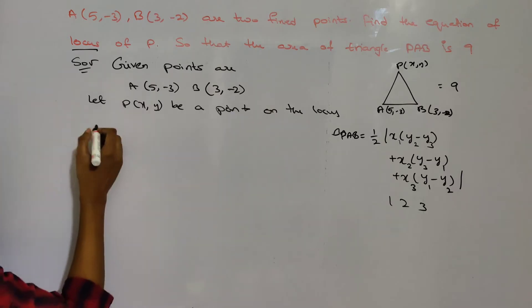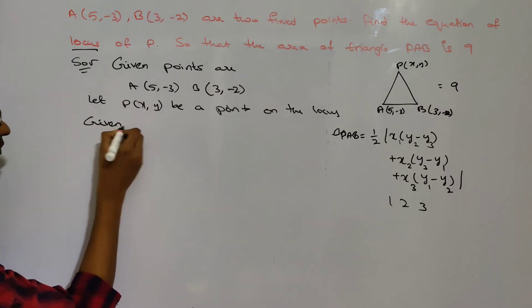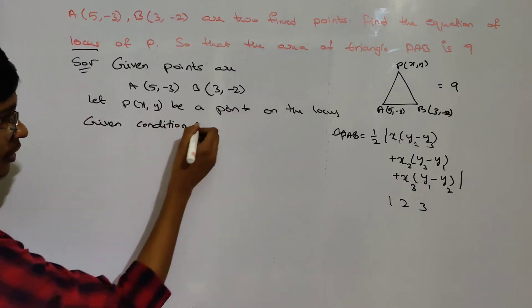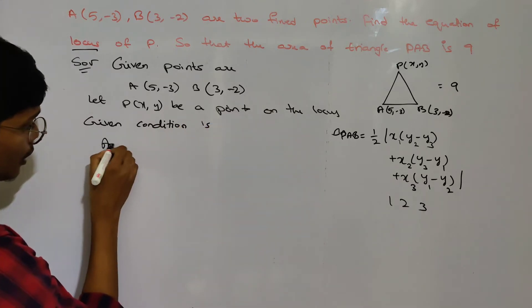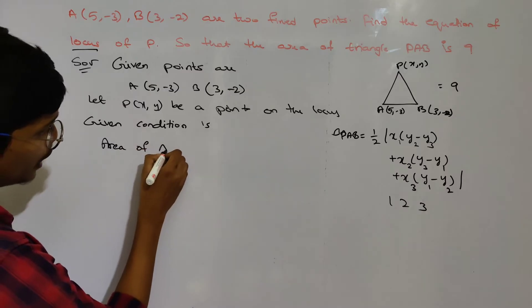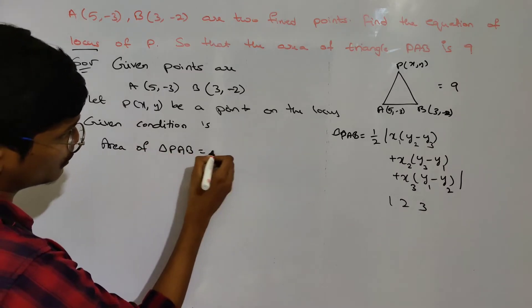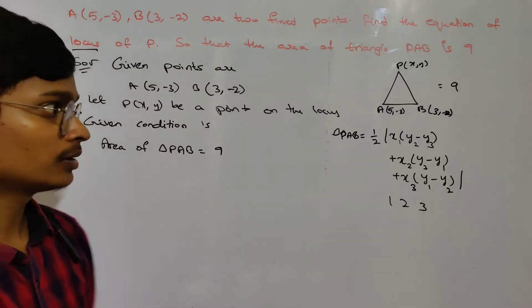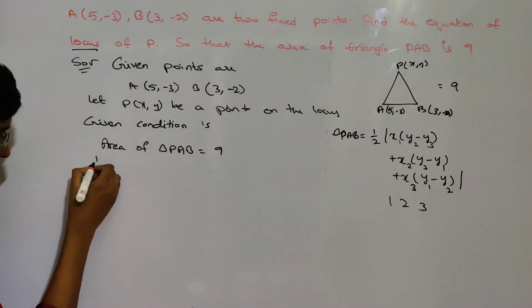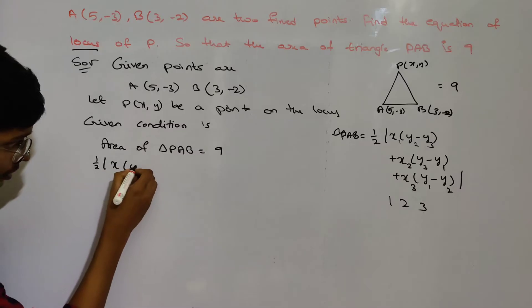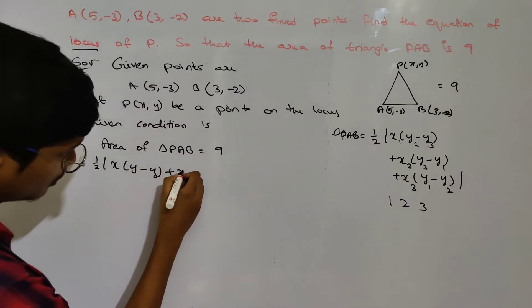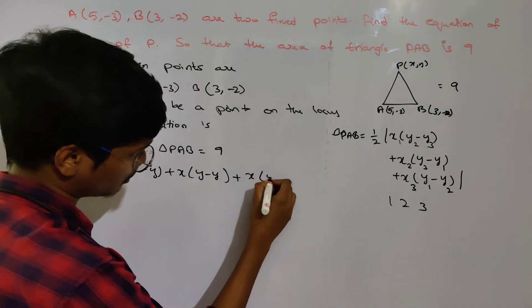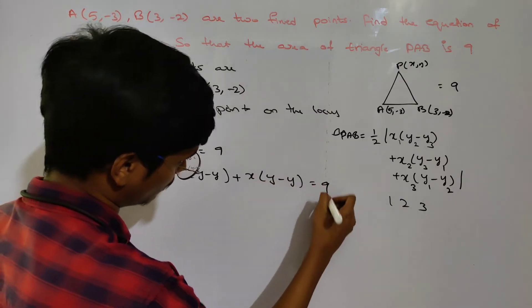The given condition is: area of triangle PAB equals 9. So 1/2 times the modulus of [x1(y2 - y3) + x2(y3 - y1) + x3(y1 - y2)] equals 9.